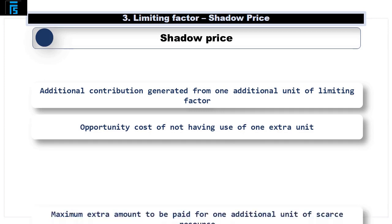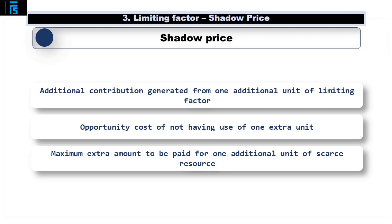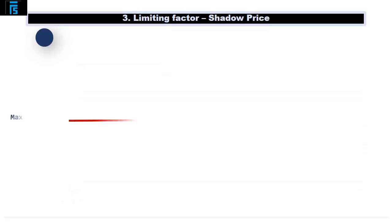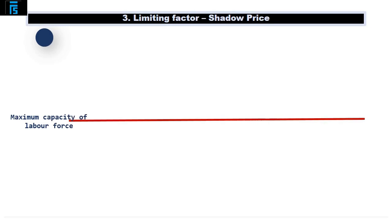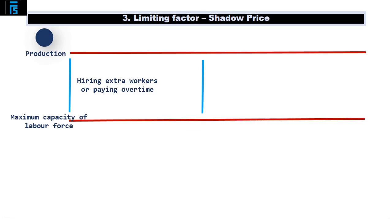A shadow price is the maximum extra amount that a company would be willing to pay for one additional unit of scarce resource. It is not the maximum price which should be paid, but rather the maximum extra that a company would be willing to pay over and above the current purchase price for a limited resource. For example, a company may have reached its maximum capacity for its permanent labour force and may consider hiring temporary workers or paying the current workforce overtime.